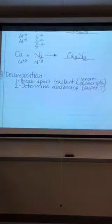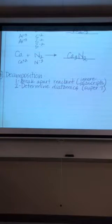So two atoms. And so we're going to determine the diatomics. And these, you guys will hear me refer to often as the super seven. Why? Because there are seven elements that need to be diatomic. They need to occur as two atoms because they are not stable by themselves.